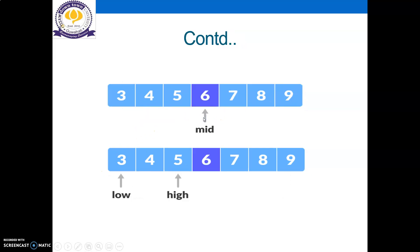So first value will be considered as low, and the last value will be considered as high. Now by the rule of binary search, we will directly go to the mid position of the array, which is six.